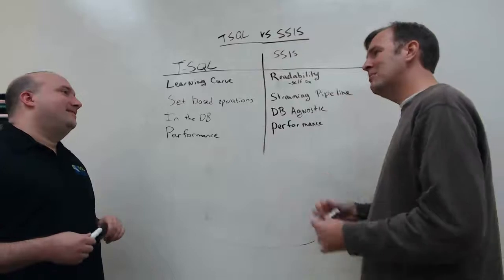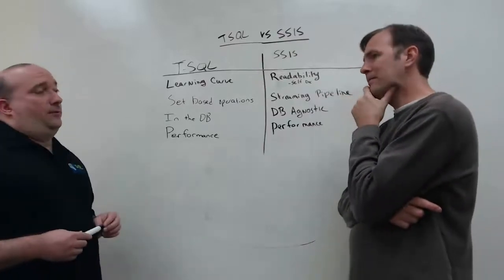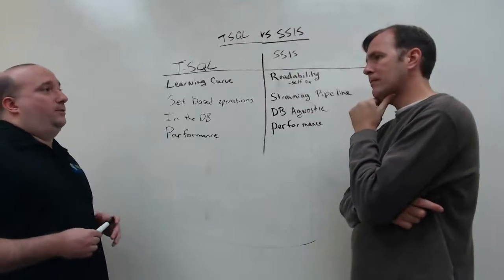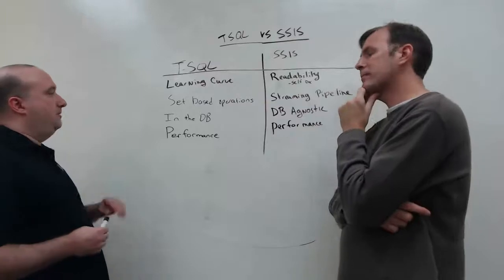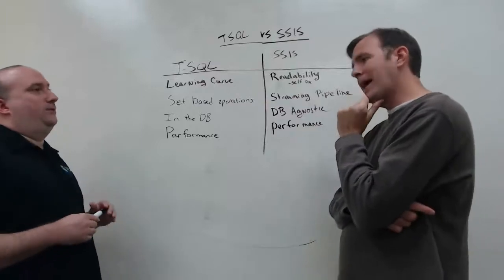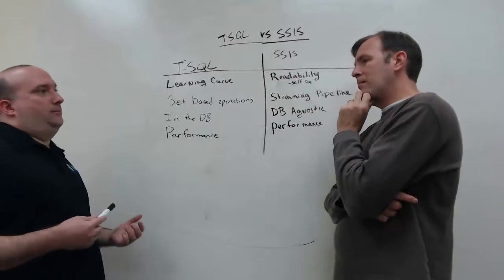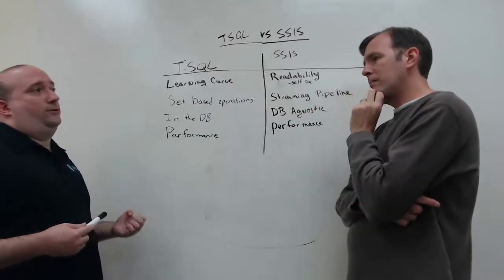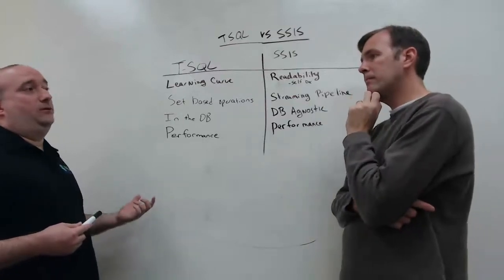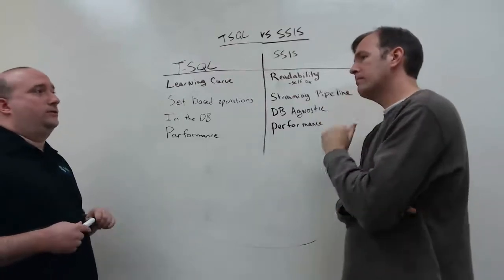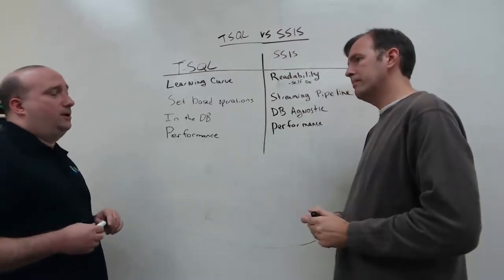So we both wrote down performance. As I already mentioned, there's many operations that are just faster to do directly in SQL. If I want to order a set of rows, it's almost guaranteed faster in SQL. Doing bulk inserts in a lot of cases, if I'm not having to do a lot of transformations on the rows, I can do a bulk insert using BCP or something like that direct into my SQL Server engine. I don't even need to involve SSIS, and I will get better performance.